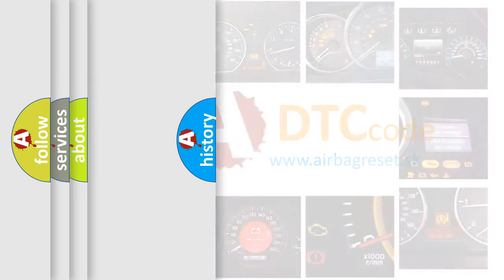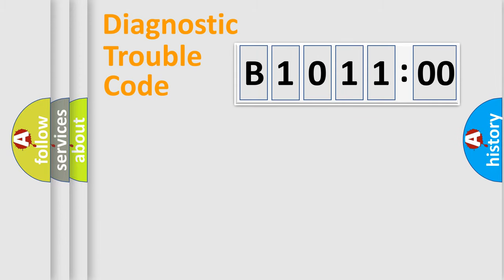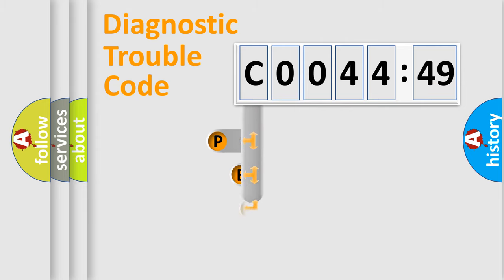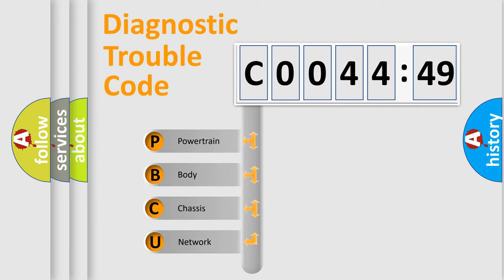We divide the electric system of automobile into four basic units: Powertrain, Body, Chassis, and Network. This distribution is defined in the first character code.